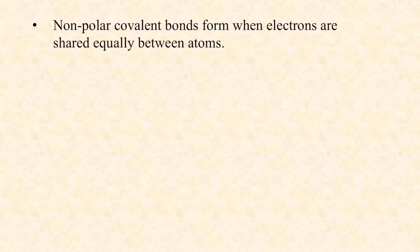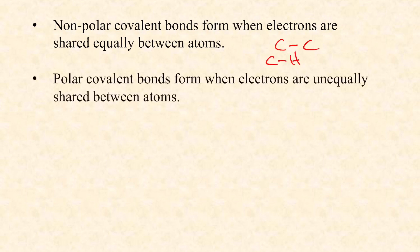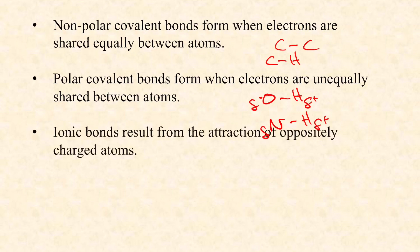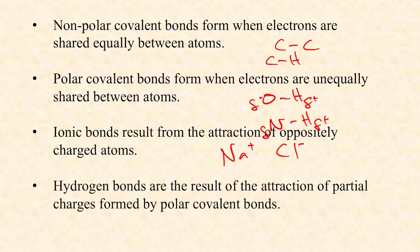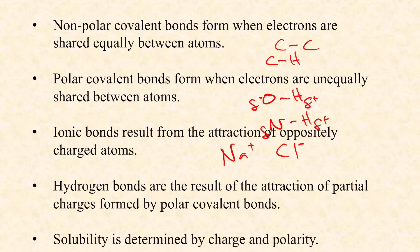Let's summarize the key points. Nonpolar covalent bonds form when electrons are shared equally between atoms, such as carbon-to-carbon and carbon-to-hydrogen. Polar covalent bonds form when electrons are unequally shared, most commonly oxygen-to-hydrogen and nitrogen-to-hydrogen. Ionic bonds result from the attraction of oppositely charged atoms like sodium and chlorine — really just an extreme case of polarity. Hydrogen bonds happen when partial charges that form around polar covalent bonds are attracted to each other.